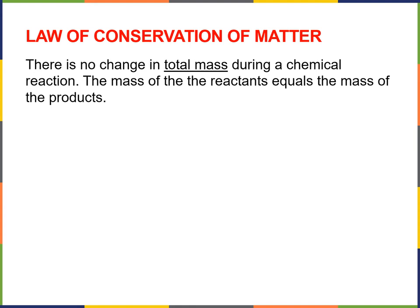What is a law? We're not talking about the Constitution of the United States — we're talking about a natural law. A natural law arises when people make the same observation over and over, and every time you have a certain set of conditions, you get the same result. The law of conservation of matter says there is no change in total mass during a chemical reaction: the mass of the reactants equals the mass of the products. So when copper reacts with oxygen to form copper oxide, the mass of the copper plus the mass of the oxygen must equal the total mass of the copper oxide formed.